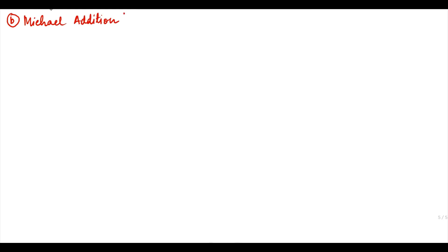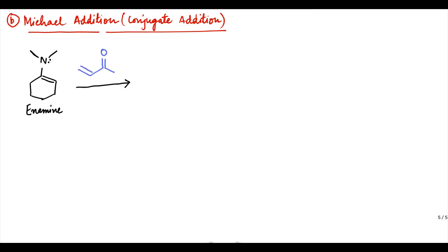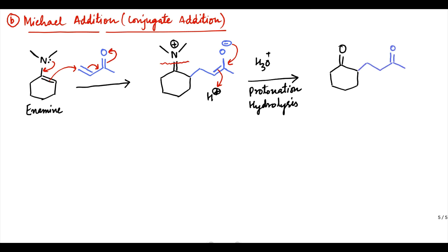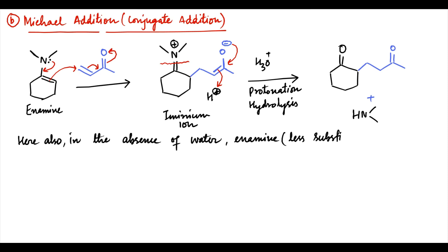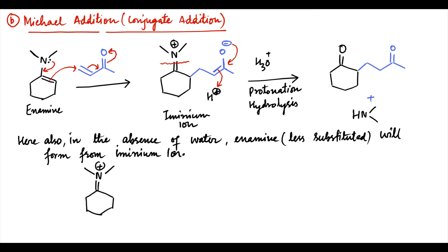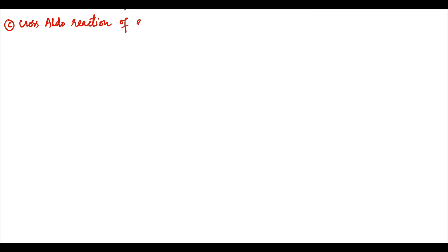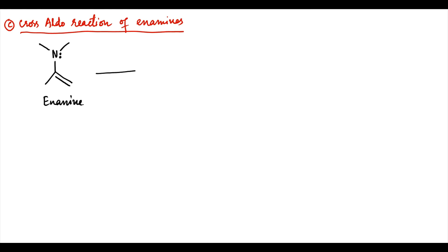Enamines are also nucleophilic enough to perform conjugate (Michael) additions with alpha-beta unsaturated species such as methyl vinyl ketone. The pi donation by nitrogen lone pair directs conjugate Michael-type addition at beta-carbon, forming an iminium-type intermediate. The usual procedure is to add aqueous acid after the reaction is complete, resulting in hydrolysis of the enamine and formation of a new ketone. In the absence of water, a new less-substituted enamine forms from the iminium ion. Since carbonyls are good electrophiles, enamines may also be used in crossed aldol reactions — for example, an enamine treated with acetaldehyde undergoes aldol-type reaction to form an iminium intermediate, which upon acidic hydrolysis gives a beta-hydroxyketone product.